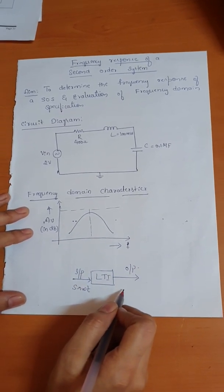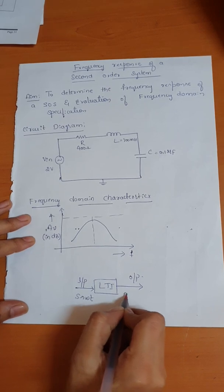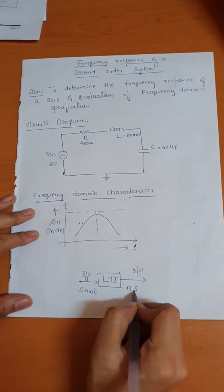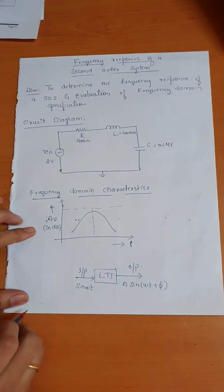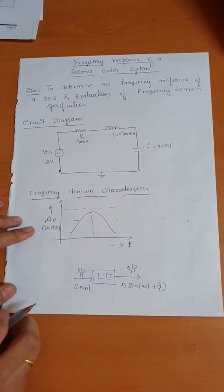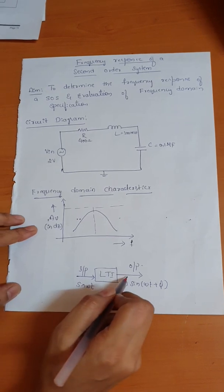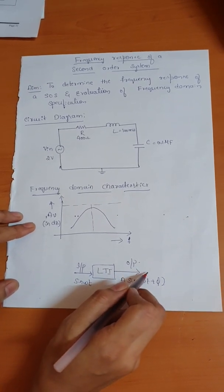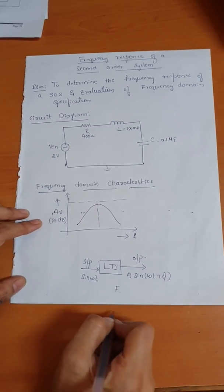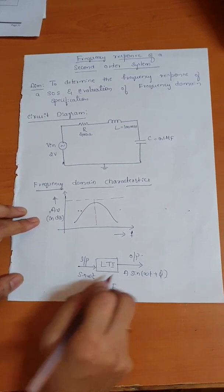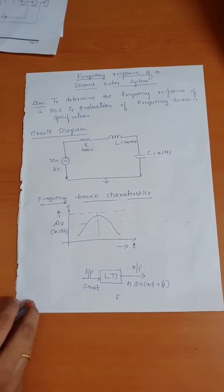The output won't be the same in magnitude and phase. Consider the output will be A·sin(ωt + φ). This is what we call the frequency response: when you give a sinusoidal input to the system, you produce a sinusoidal output with a change in magnitude and phase, but the frequency remains the same. This is the frequency response of a second order system.